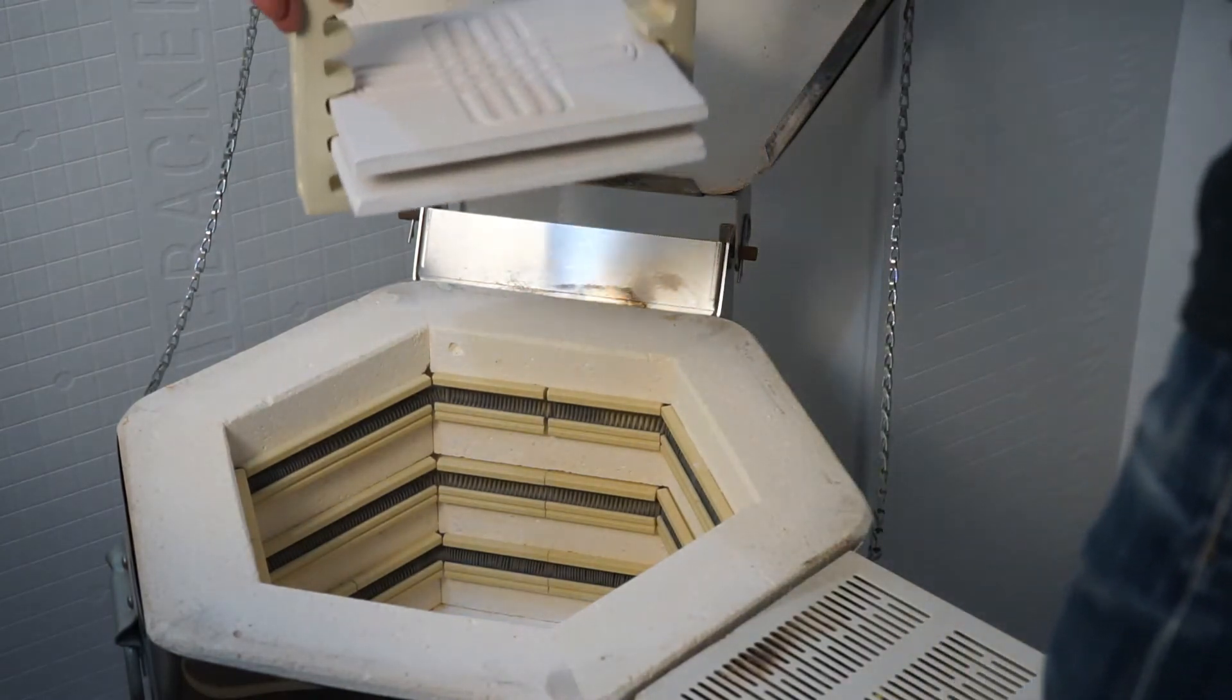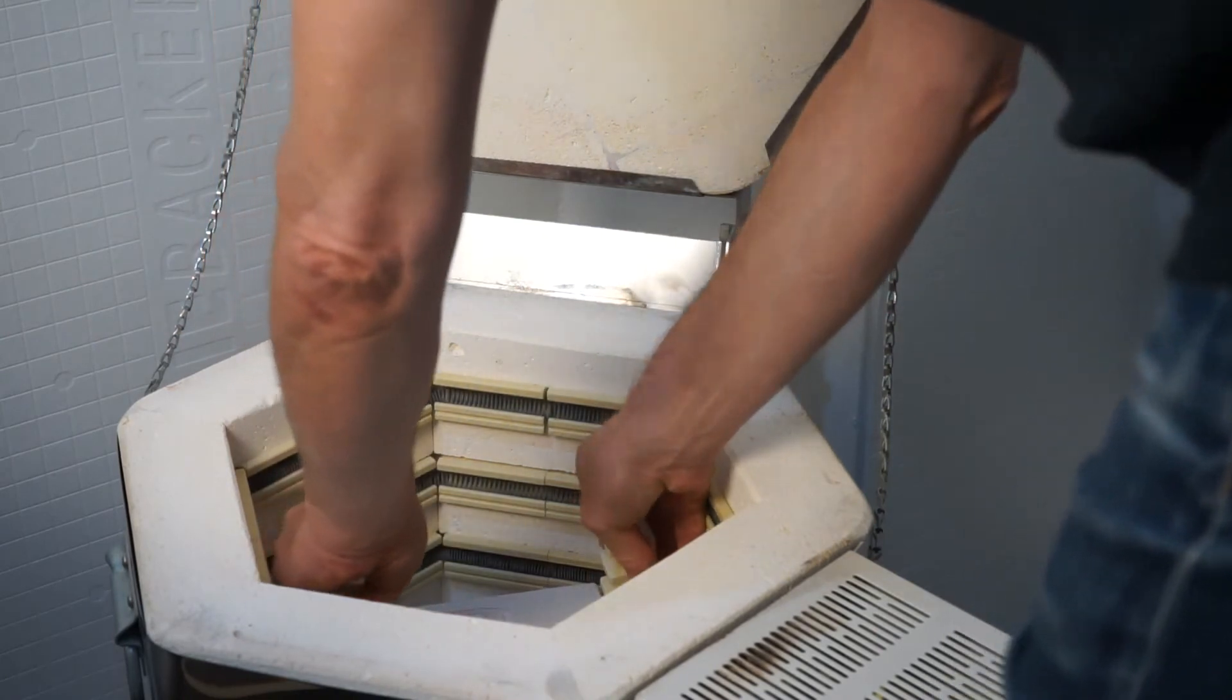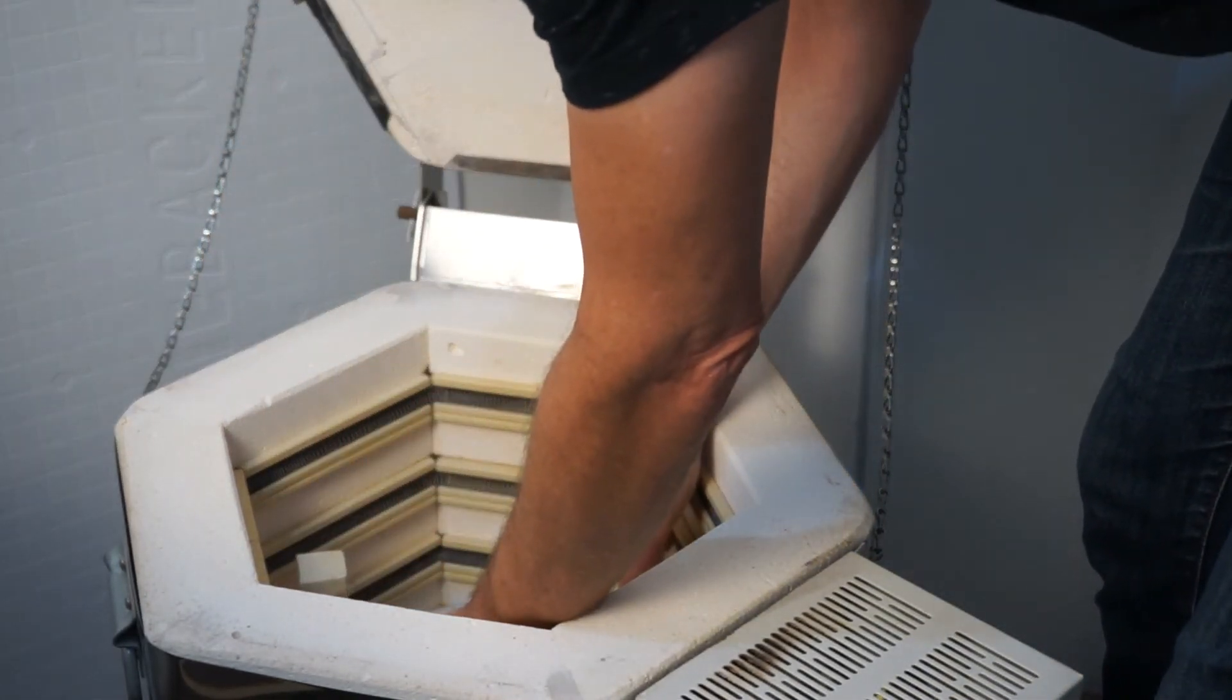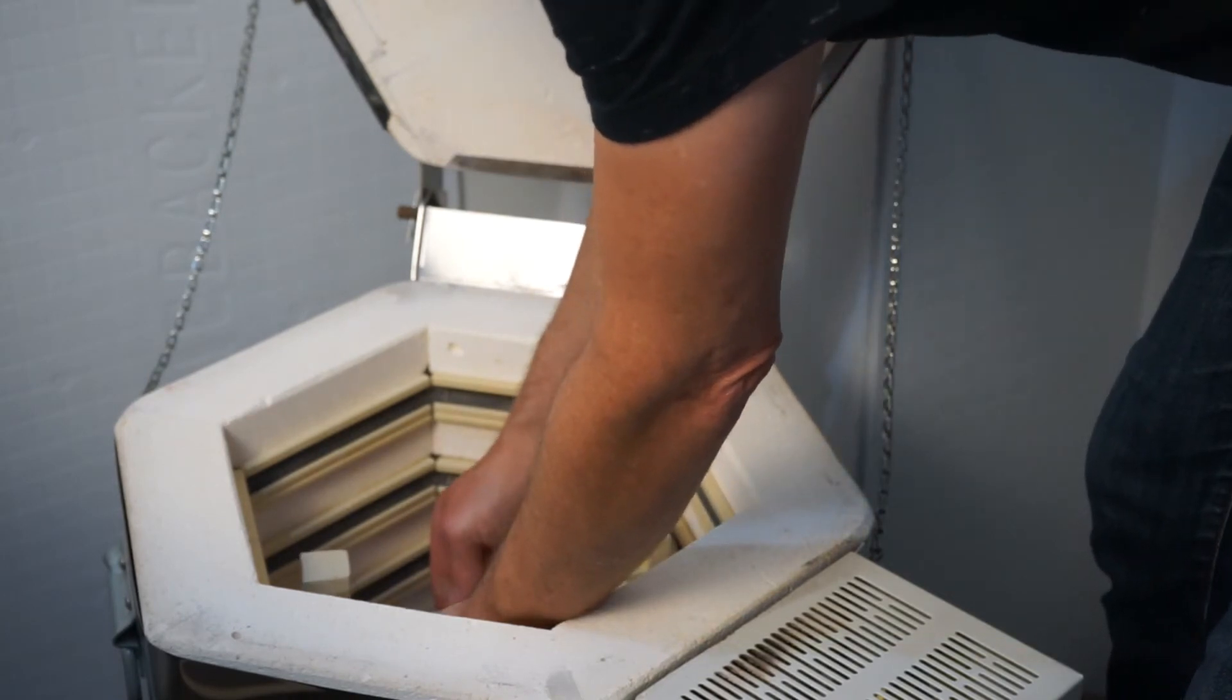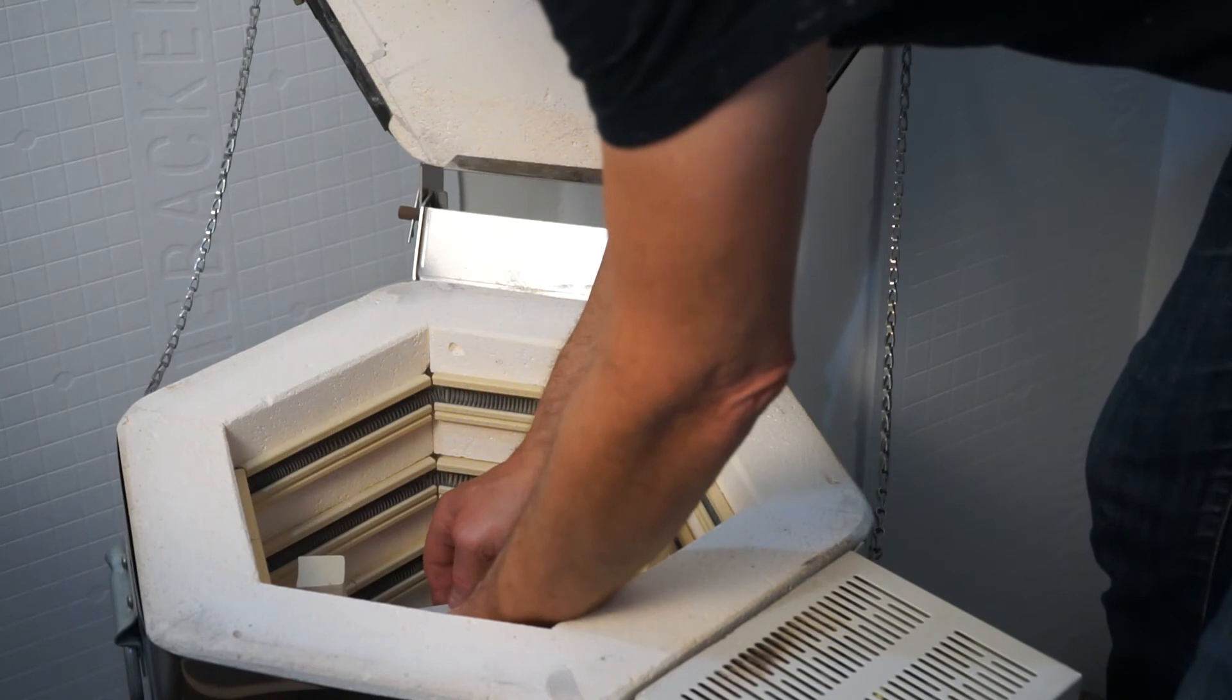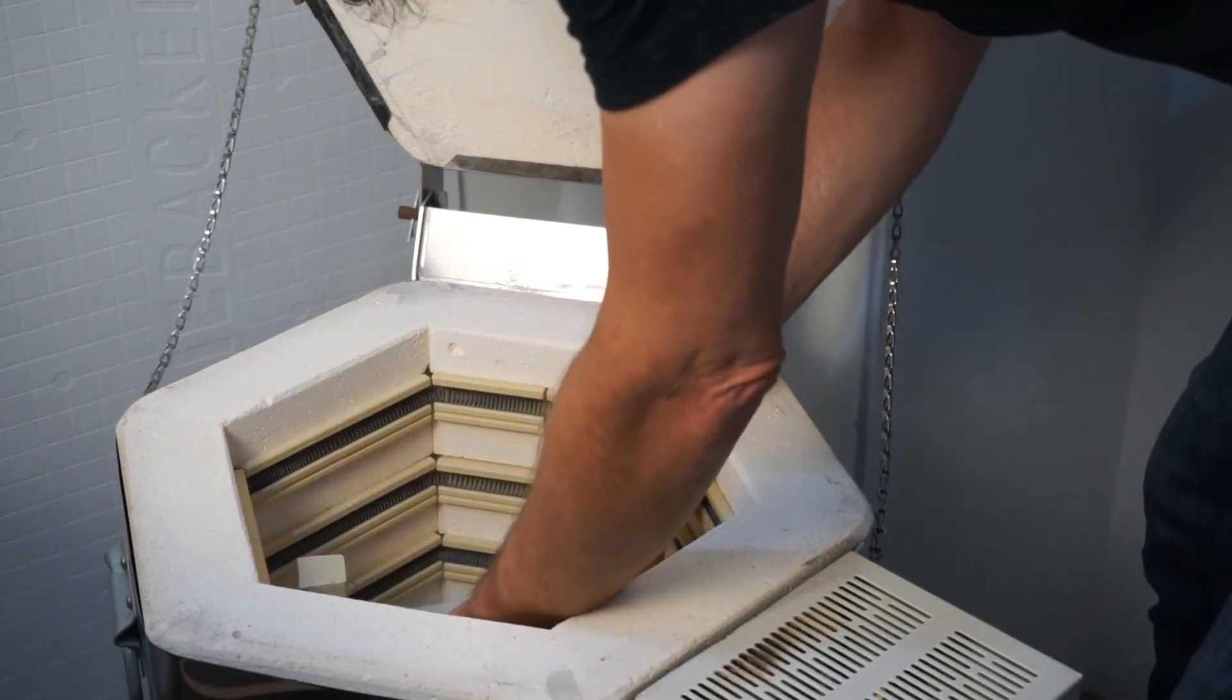The glazes will dry completely and these two tiles will go into the test kiln. I'm using tile setters because they keep the tiles from touching each other or any parts of the kiln. This firing is the second and final one and will take about four hours.